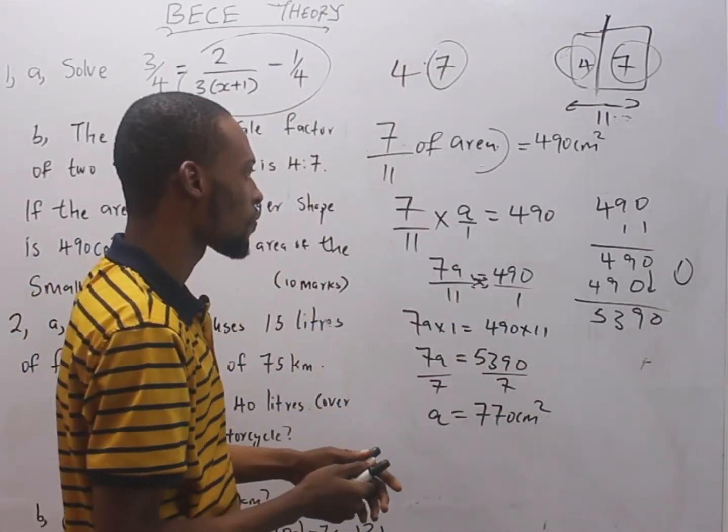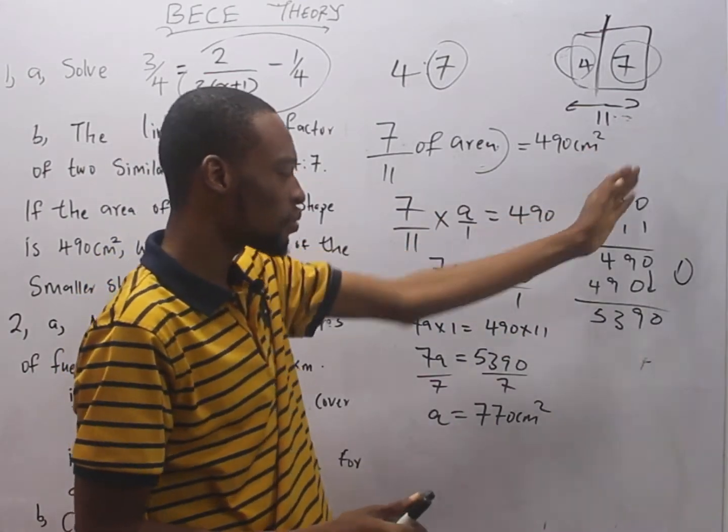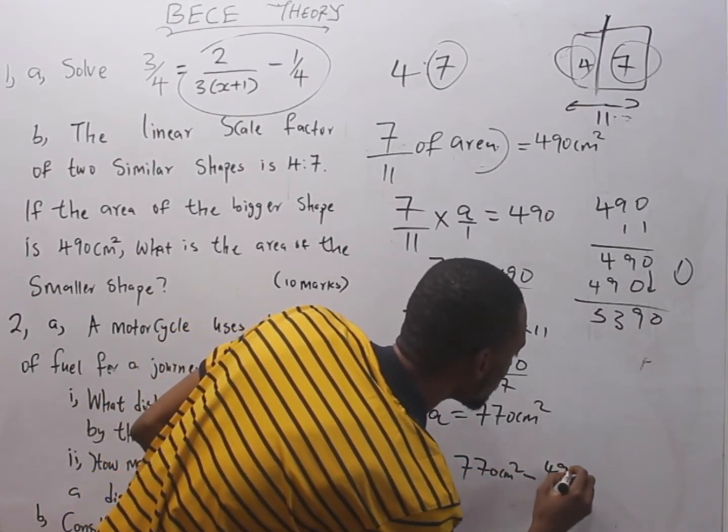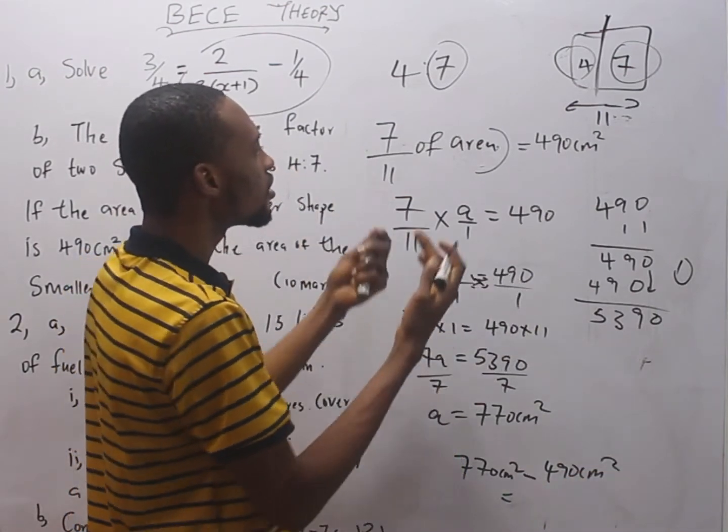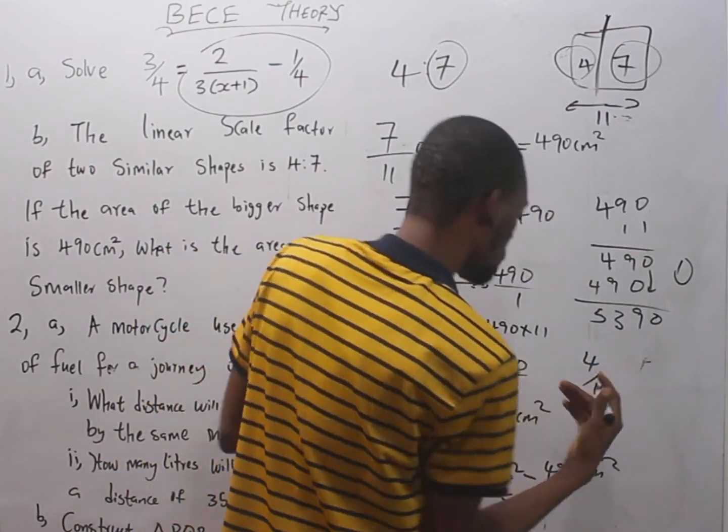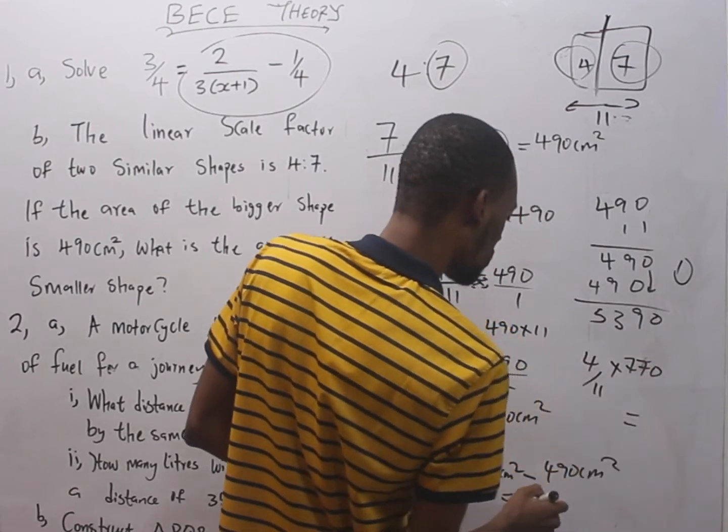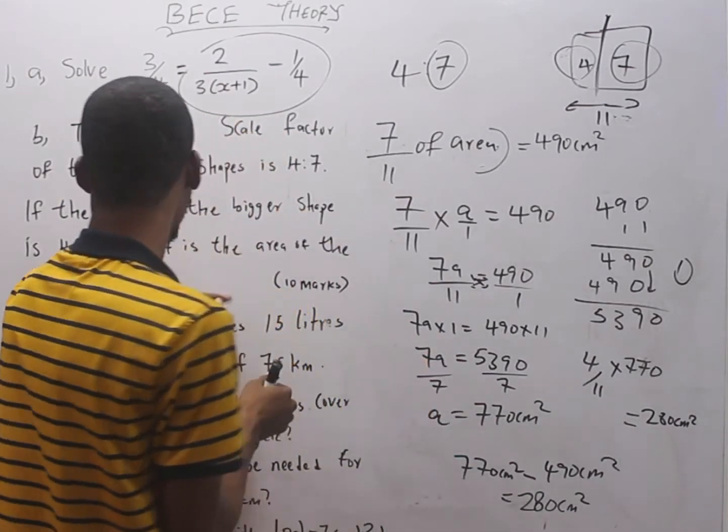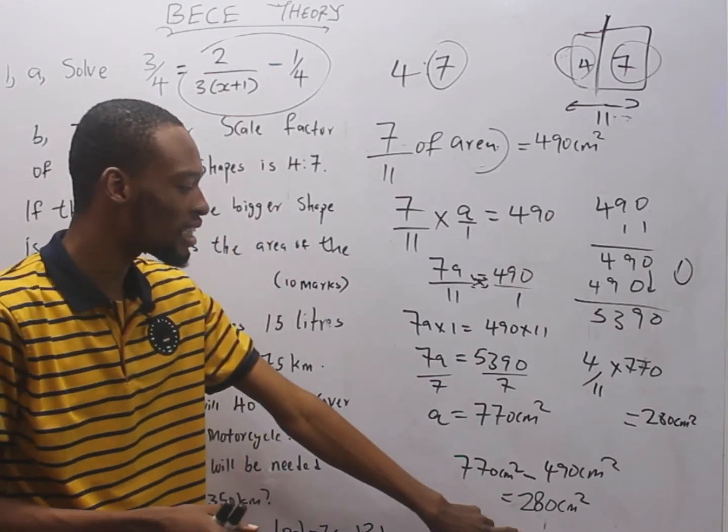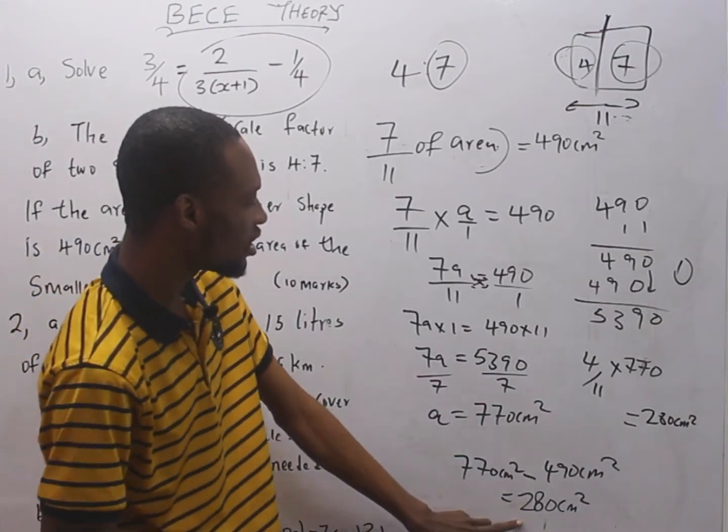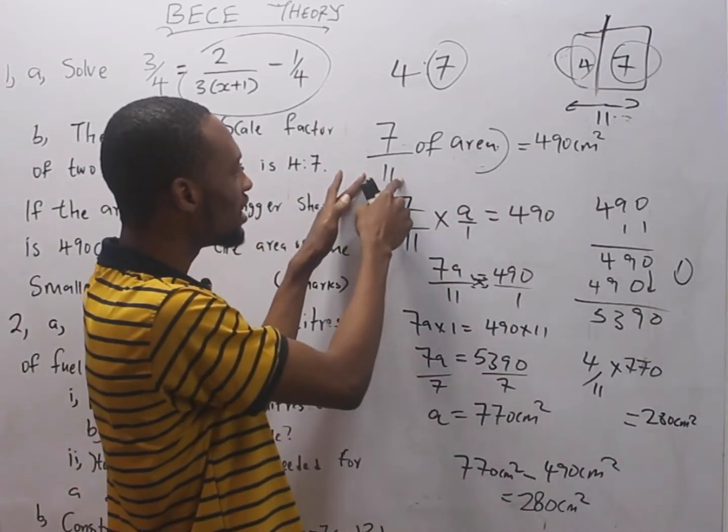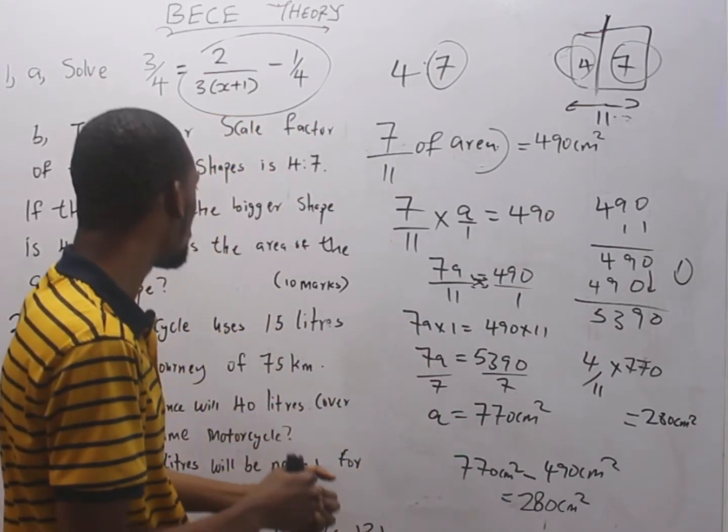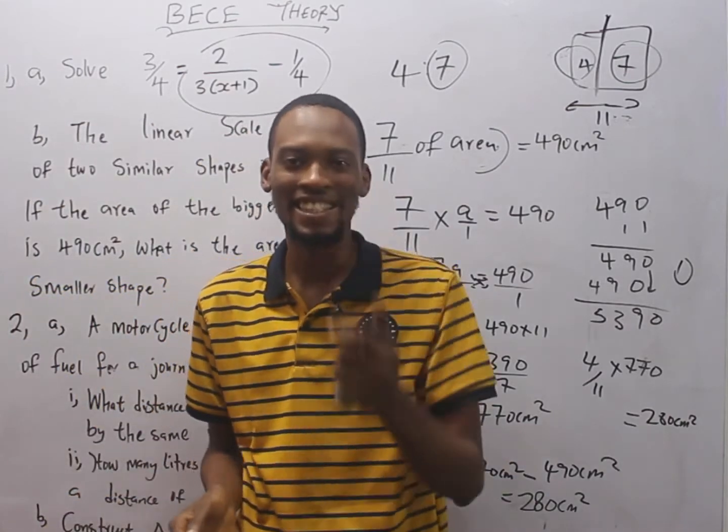If the bigger one is 490 cm2, the smaller one will simply be 770 cm2 minus 490 cm2. Or, the smaller one will be 4 over 11 of the total shape times 770. Any method you apply, you get the same answer. You can do the reverse. You can solve from here and still get the bigger shape to be 490 cm2.